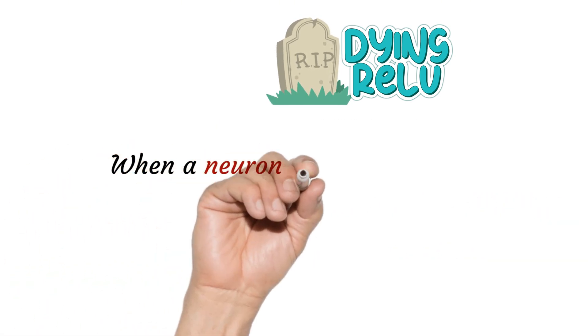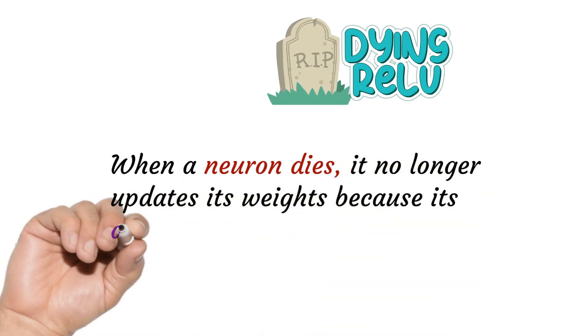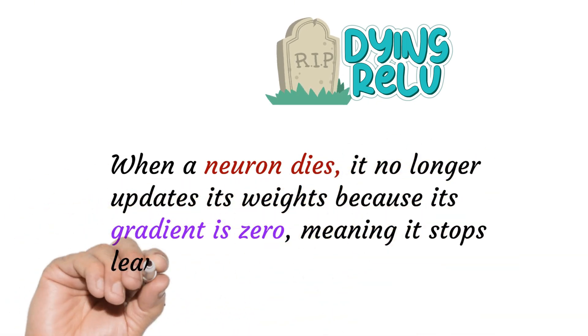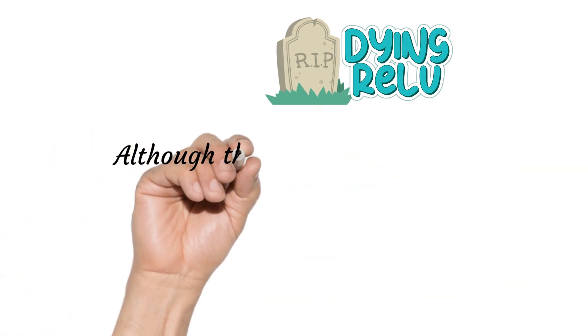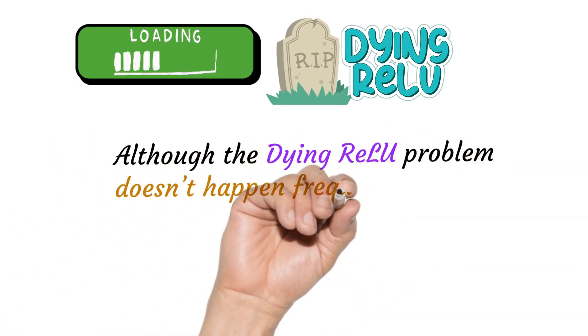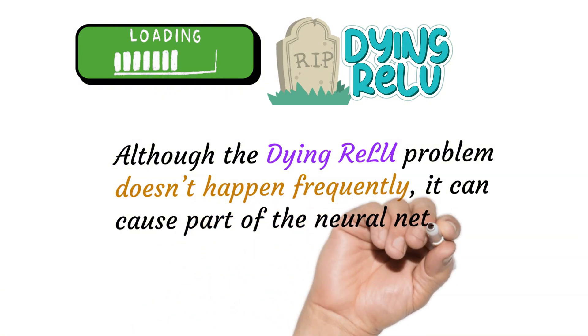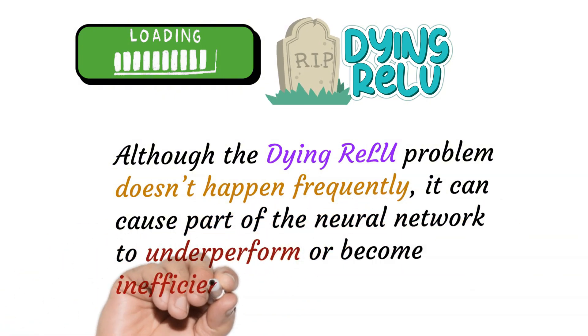When a neuron dies, it no longer updates its weights because its gradient is zero, meaning it stops learning during backpropagation. Although the dying ReLU problem doesn't happen frequently, it can cause part of the neural network to underperform or become inefficient. There are possible solutions.